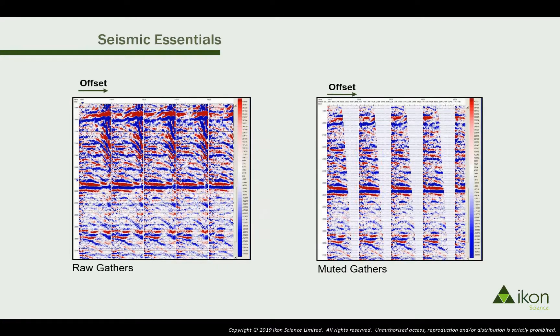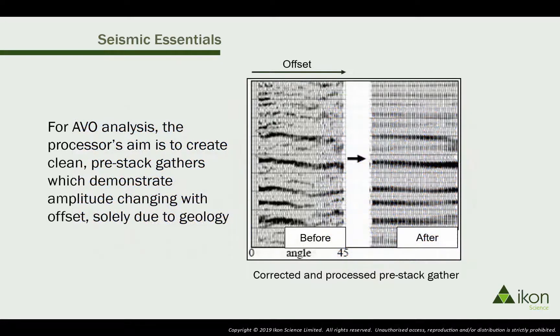The gathers are then muted to remove low frequency noise and direct arrivals, and then they are cleaned up for AVO analysis to ensure that any changes in amplitude with angle are entirely due to the elastic contrast rather than acquisition or processing artifacts.